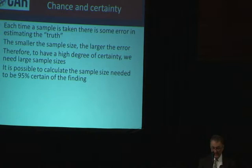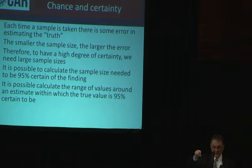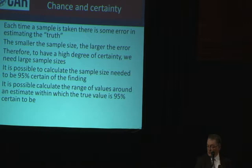It's also possible to calculate, when you have done the study with a sample, what range of values includes the actual true value. Jeff showed you this morning those figures with the horizontal bars going through the dots or triangles — the confidence intervals. Those confidence intervals represent the range of values that could be consistent with the truth, and are 95% likely to be consistent with the truth.